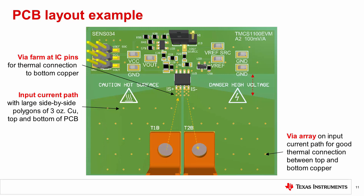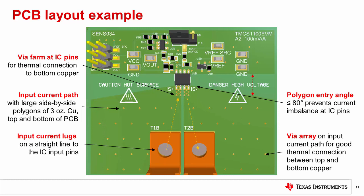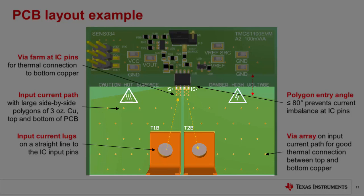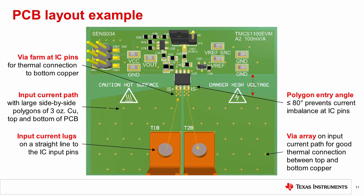TI recommends these best practices for optimal magnetic current sensing performance. Place the input current lugs or connectors on a direct path straight to the IC input pins. And design the input current copper areas to enter the IC at an angle of 80 degrees or less. Both of these techniques ensure balanced current distribution throughout the lead frame for best sensitivity error. Also, design the input current copper areas symmetrically and side by side, which helps cancel stray fields from the input current flowing on the PCB. Finally, ensure that plenty of clearance is provided between the high voltage and low voltage sides of the PCB to meet any applicable isolation safety standards.